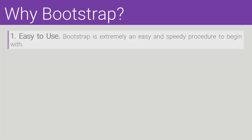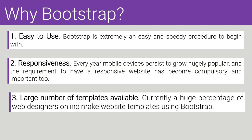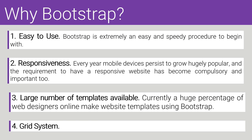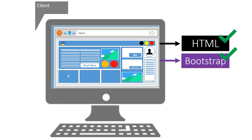Why should we use Bootstrap first? Bootstrap is easy to use. Bootstrap is responsive. Bootstrap has a large number of templates available. And Bootstrap's grid system helps us to simply separate divs in the web pages we are going to make. These are among the reasons why we should begin with Bootstrap instead of CSS, to make our web pages. However, I also recommend you continue studying CSS. You now know what is meant by HTML, CSS, and Bootstrap.